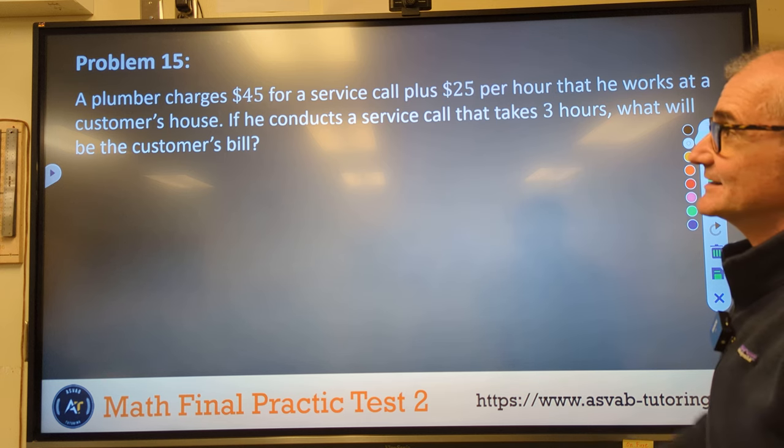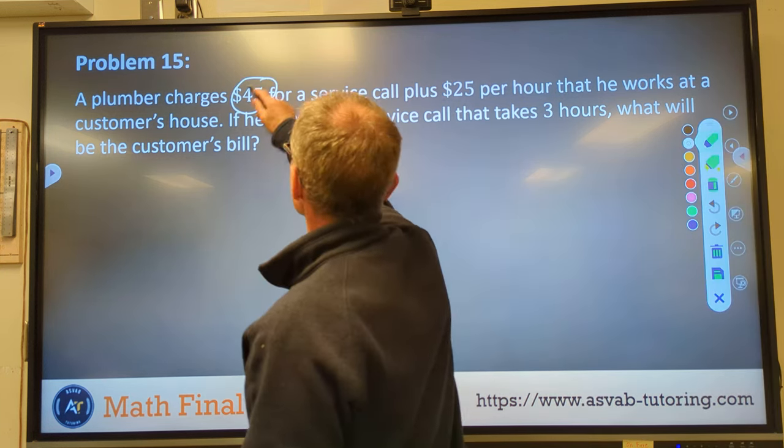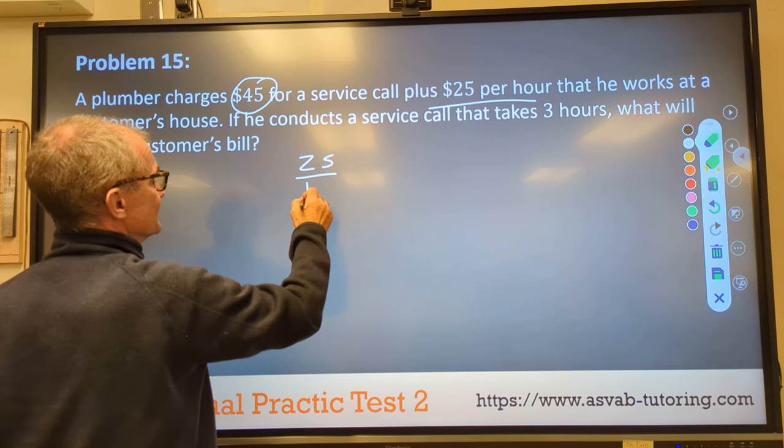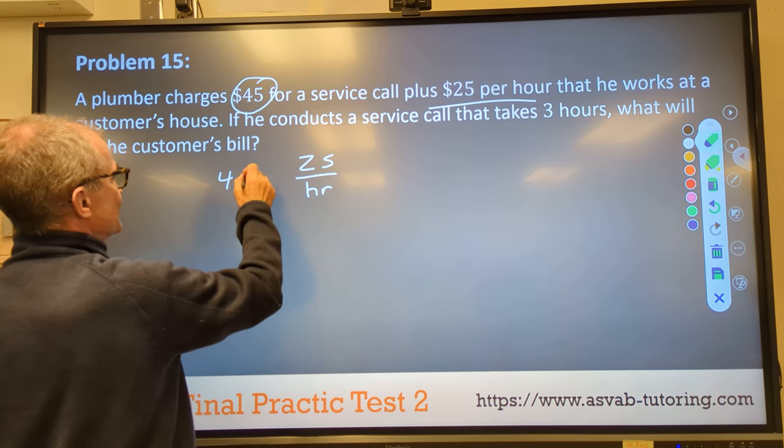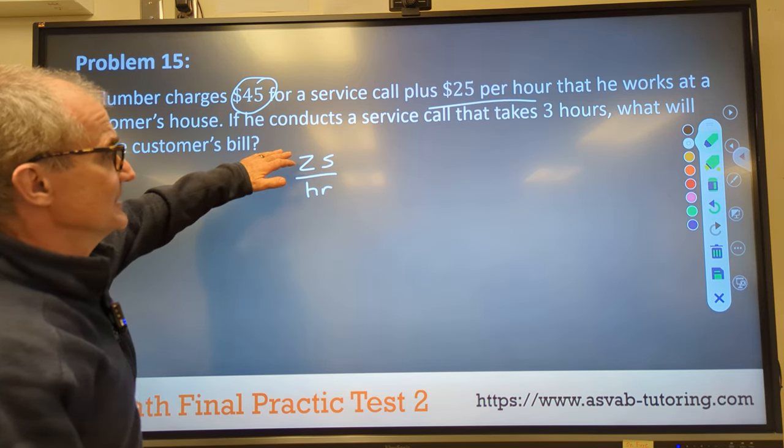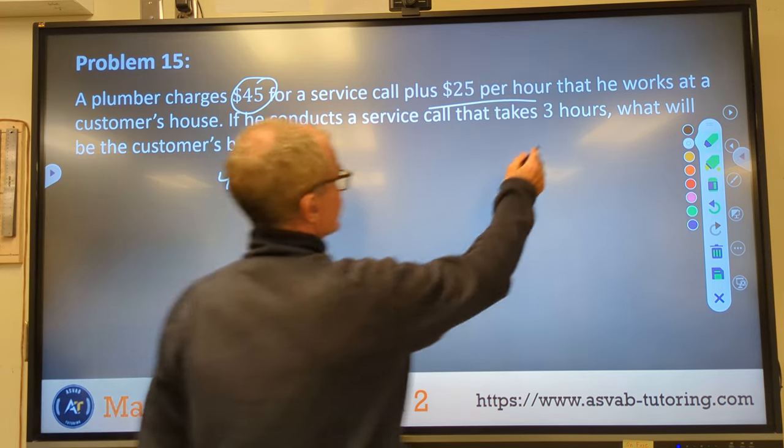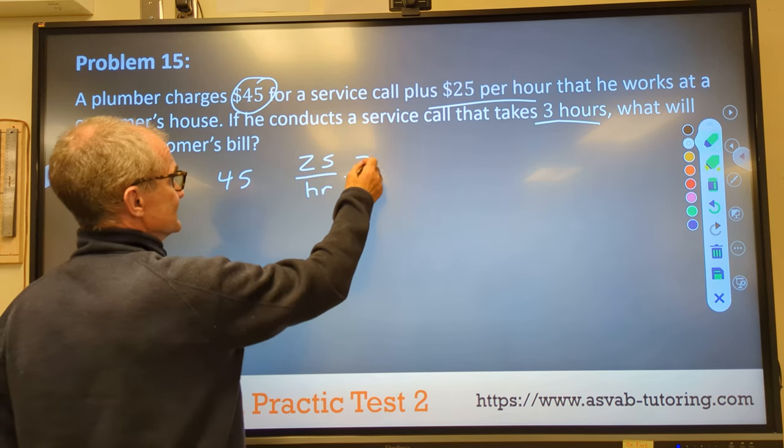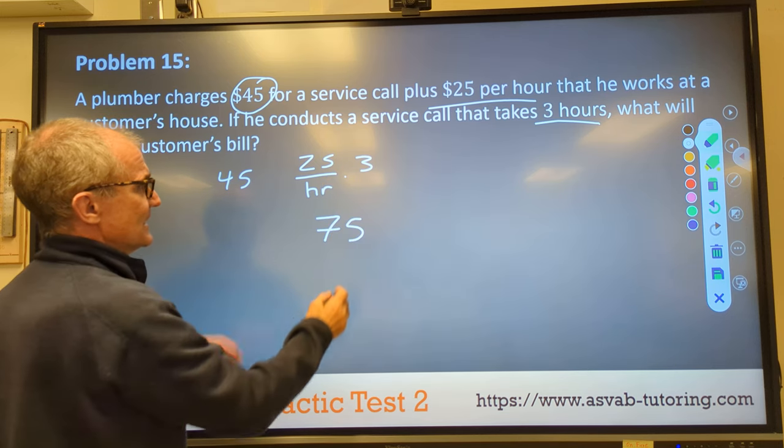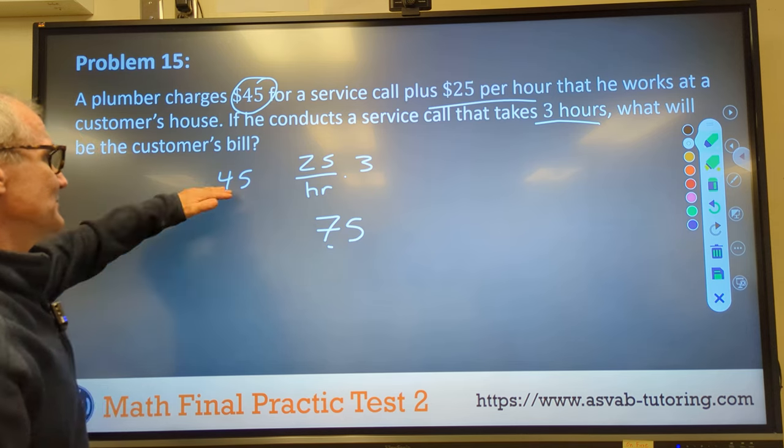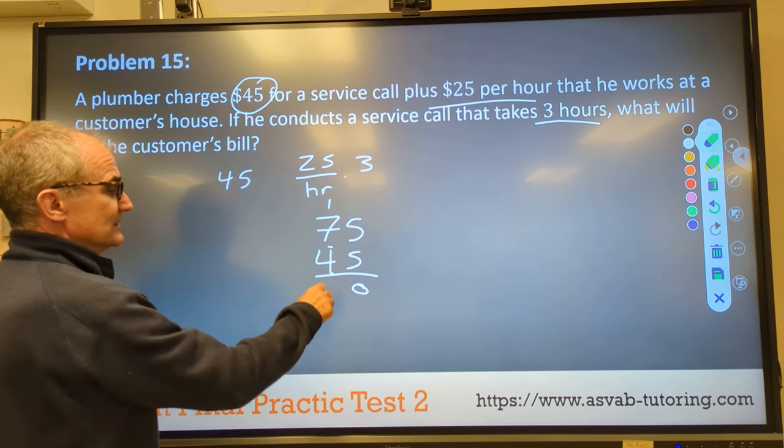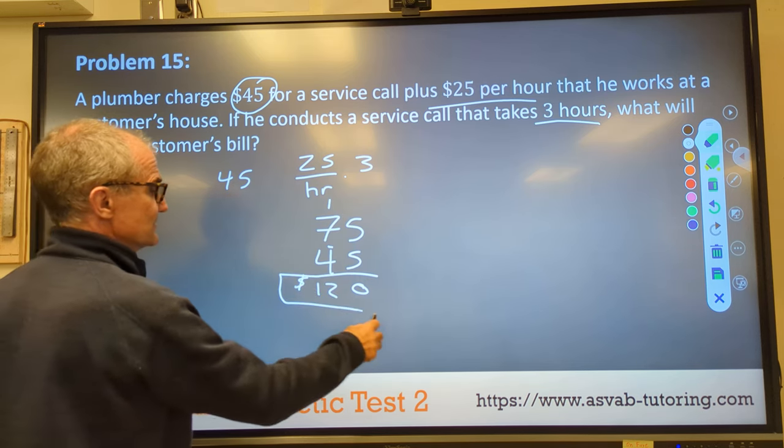It's kind of a complex one because we've got so many units here. The correct answer is 75. All right, last problem, problem number 15. A plumber charges $45 for a service call plus $25 per hour. So $25 per hour plus a flat fee of $45. He works at a customer's house. If he conducts a service call and takes three hours, what will be the customer's bill?